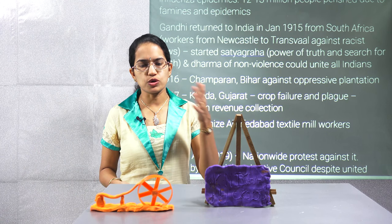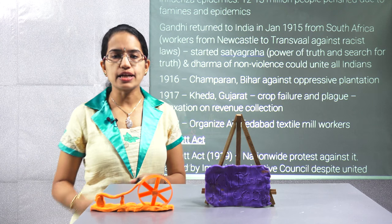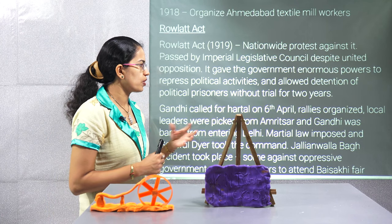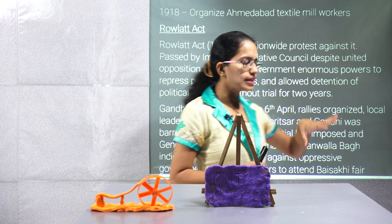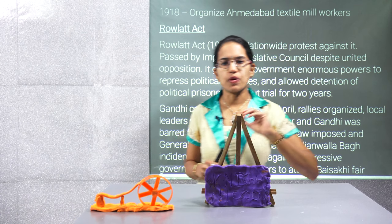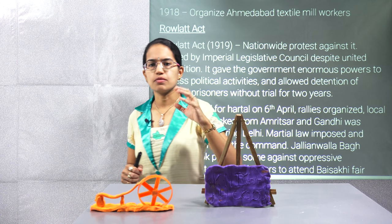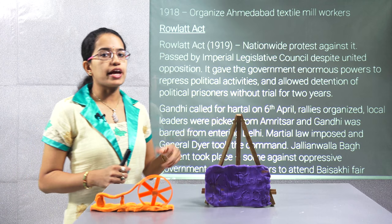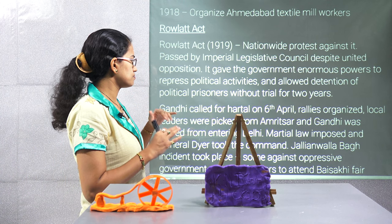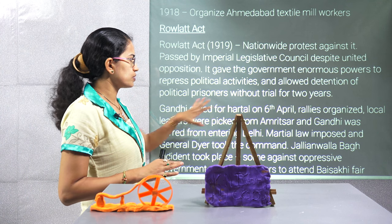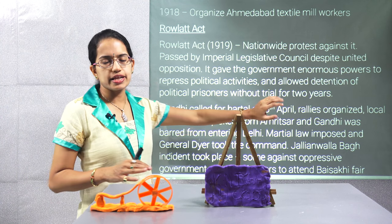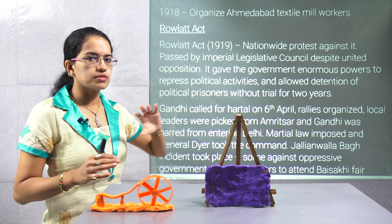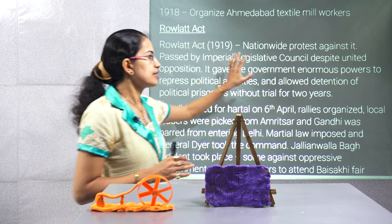The first phase was related to the Rowlatt Act. The Rowlatt Act basically talked about checking the powers of political persons and bringing them into trial — they could be detained for two years without any question, without trial. That was the concept under the Rowlatt Act.